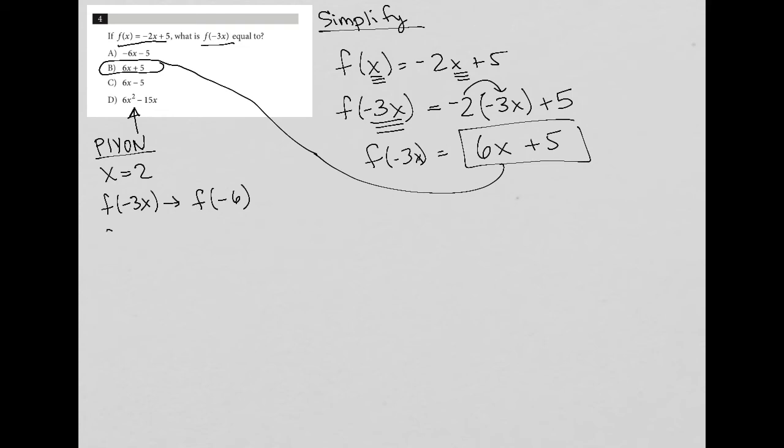I then go to my f of x equation, negative 2x plus 5. And I say, okay, well, f of negative 6 is equal to negative 2 times negative 6 plus 5. So it's equal to 12 plus 5, which is equal to 17.